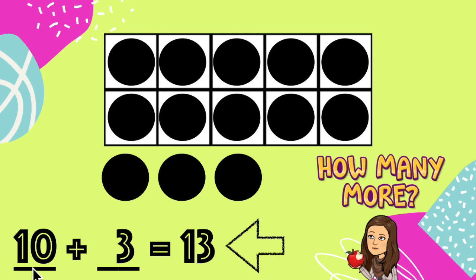What does the 10 represent? It represents the group inside of the 10 frame. What does the 3 represent? You got it! It's how many counters in all.